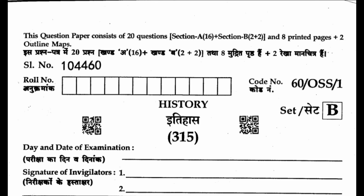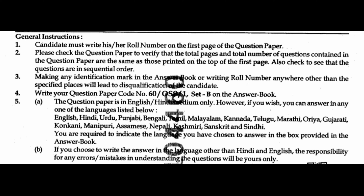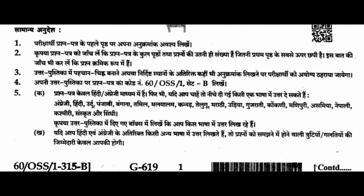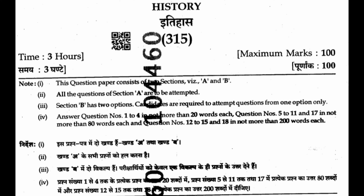Hello students, today I am going to solve an IS315 history question paper of February 2021. This question paper consists of 20 questions. Section A has 16 questions and section B has 2 plus 2 questions. Maximum marks is 100 and passing marks is 30 only. Total time duration is 3 hours. All the questions of section A are to be attempted. Section B has 2 options; attempt only 1 option.